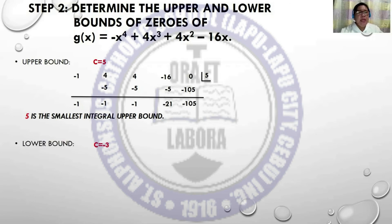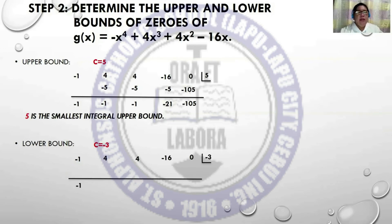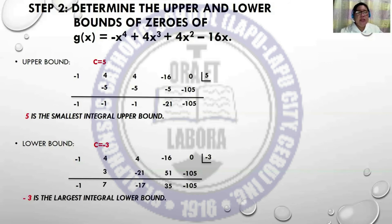For the lower bound, c = -3. The coefficients are -1, 4, 4, -16, 0, with c = -3. Applying synthetic division: bring down -1. -1 times -3 is +3. Combine: 7. 7 times -3 is -21. Combine: -17. -17 times -3 is +51. Combine: 35. 35 times -3 is -105. Therefore, -3 is the largest integral lower bound, and we have alternating signs: -1, positive, negative, positive, negative.